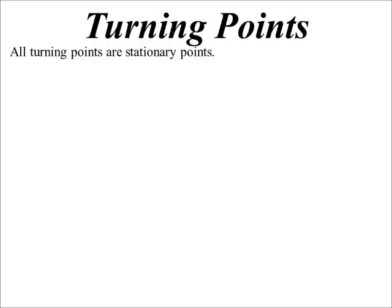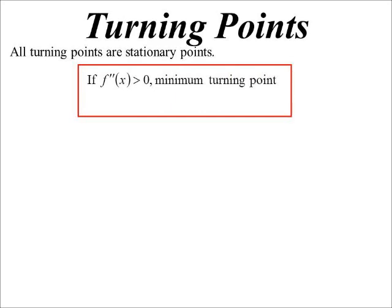This now allows us to classify those stationary points without having to use a table of values. Because if we combine the idea of knowing it's a stationary point with knowing the curve is concave up, then the logical conclusion is it must be a minimum turning point. All turning points are going to be stationary points, so we locate the stationary points first, then classify them. If the second derivative is greater than zero — concave up — the turning point at the bottom must be a minimum. If it's concave down, the turning point is at the top, so it's a maximum turning point.